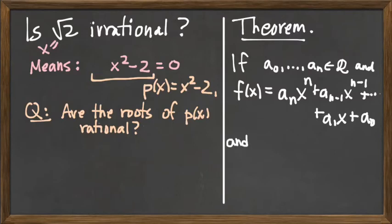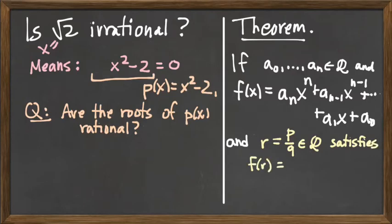So if these two things are true - that all these are rational numbers and that f is a function defined by this polynomial expression - and if in addition I have a root, I'm going to call that root r which is a rational number p/q where p and q are integers, and if that rational number satisfies f(r) = 0, in other words r is a root of this polynomial which is a rational number.